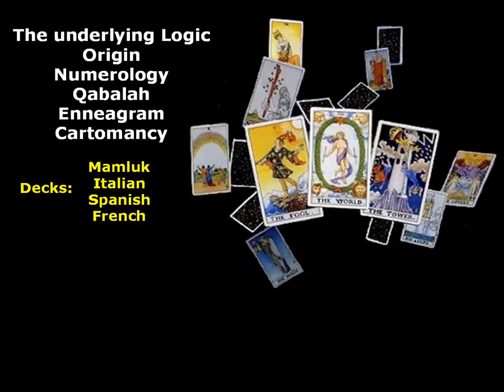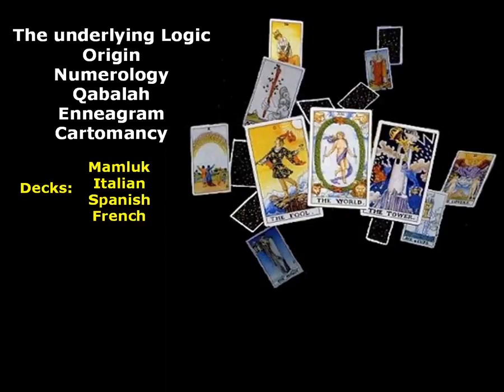The Rider-Waite-Smith deck that we mostly use is a little bit over 100 years old, but that doesn't mean that the Tarot is only that age. I actually prove in my masterclass video that the origins of the Tarot go back to ancient Kemet — what some people call ancient Egypt. So it's much, much older, and it even goes back to a time before that. It's all explained in this masterclass video.